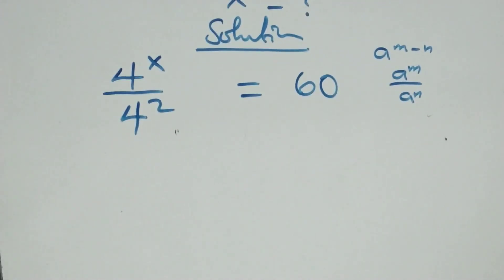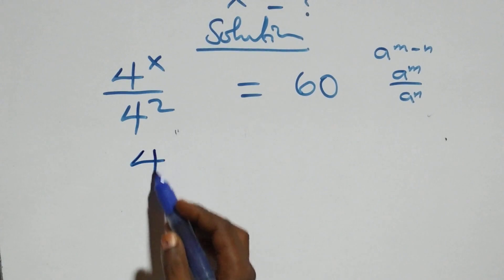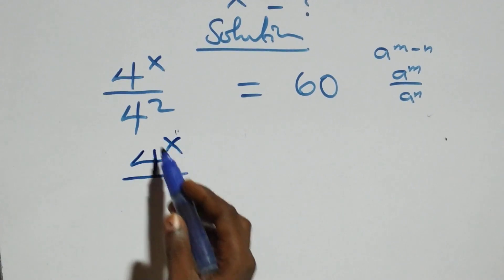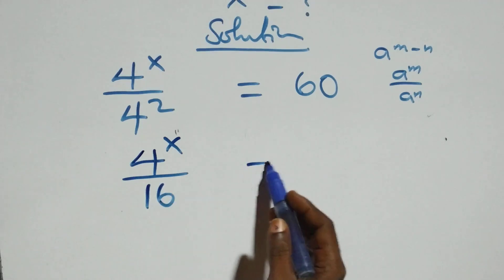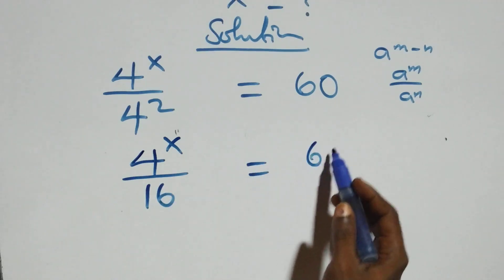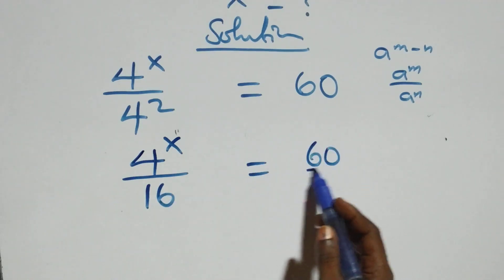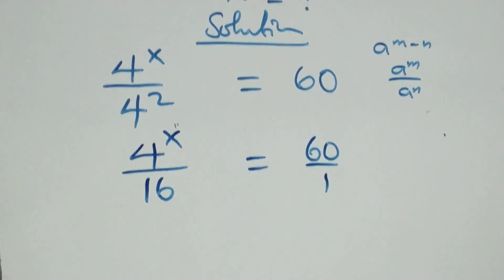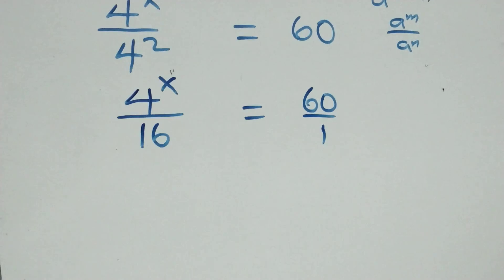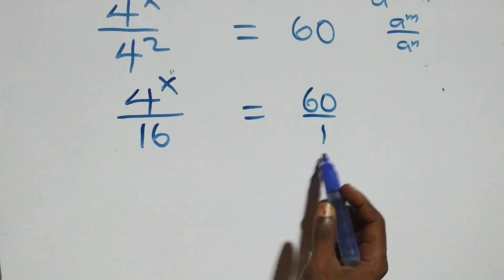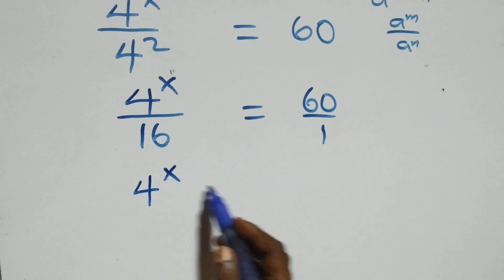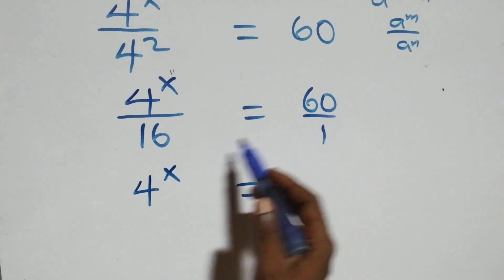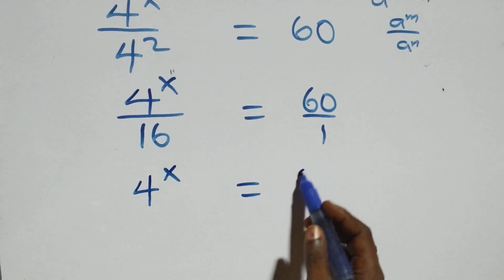The next step: we can rewrite this as four raised to power x over four squared — four times four, that's sixteen — equals sixty over one. We then cross-multiply: four raised to power x times one, which is just four raised to power x, equals sixty times sixteen.